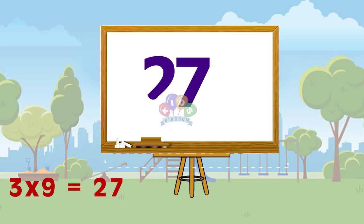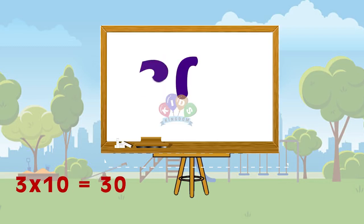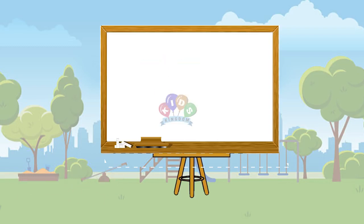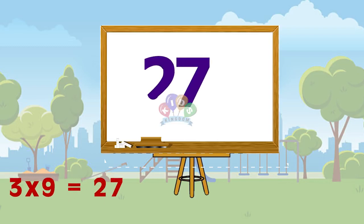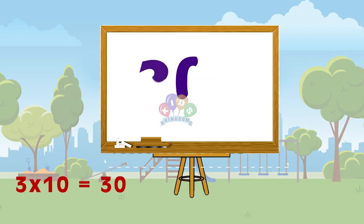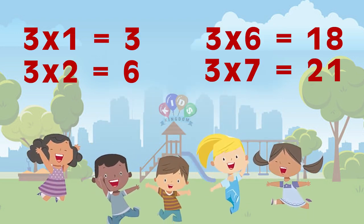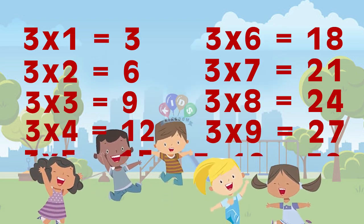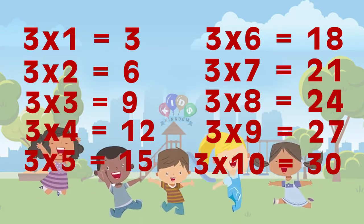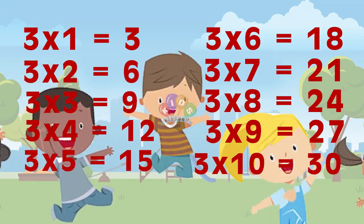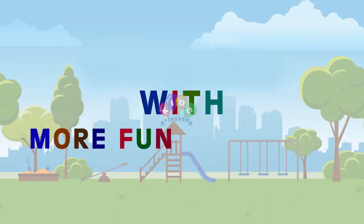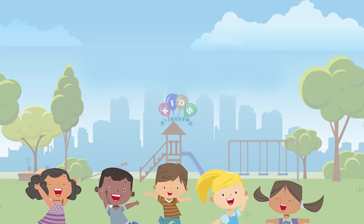Three 9s are 27, 3 10s are 30. Three 9s are 27, 3 10s are 30. Come on children, let us learn, let us learn with more fun.